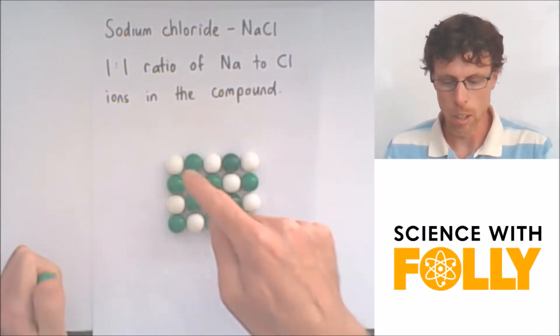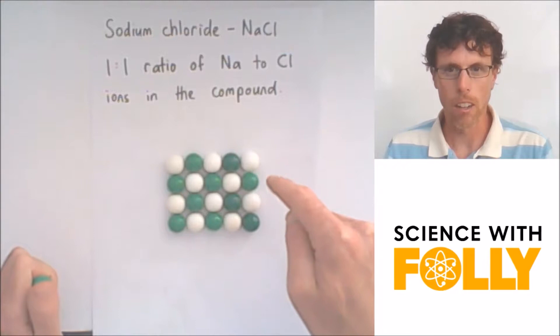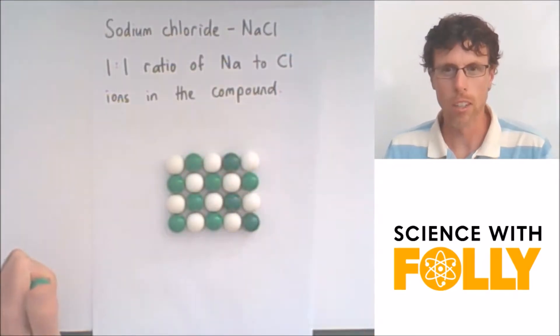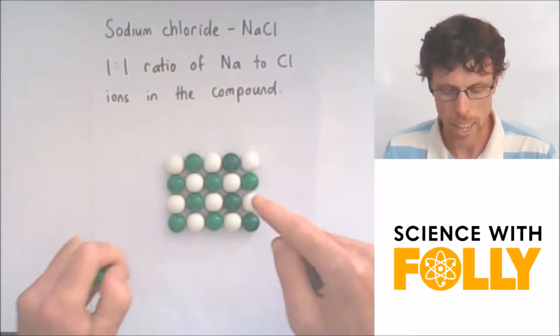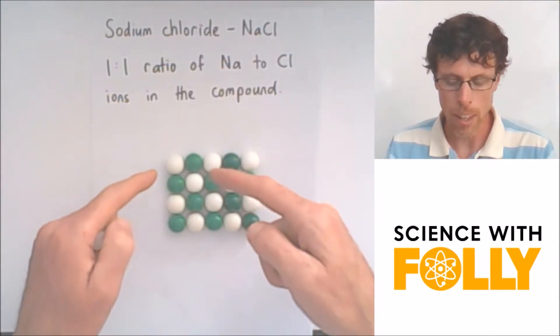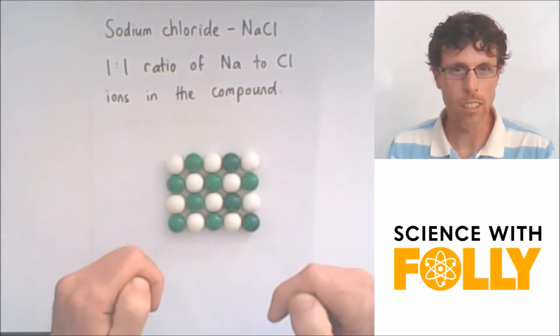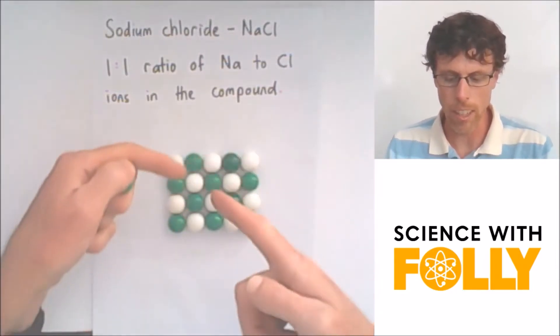Here's a 2D lattice. All the sodium ions are surrounded by chloride ions and vice versa. And if you look closely, you can see the sodium ions are touching the chloride ions, but they are not touching each other.